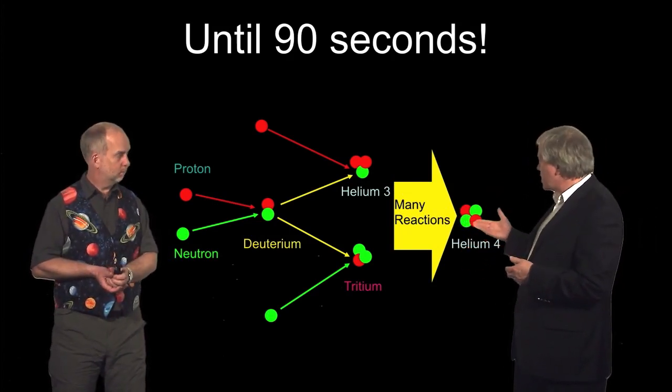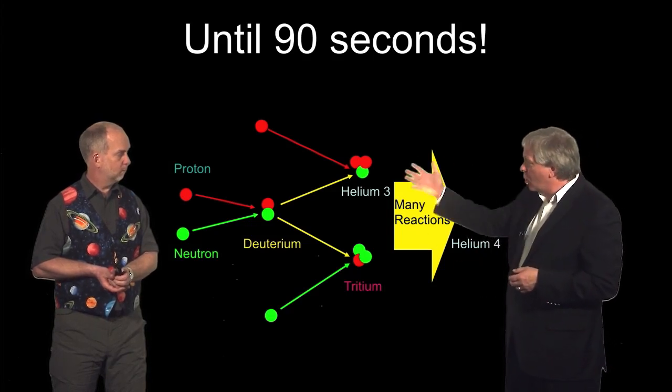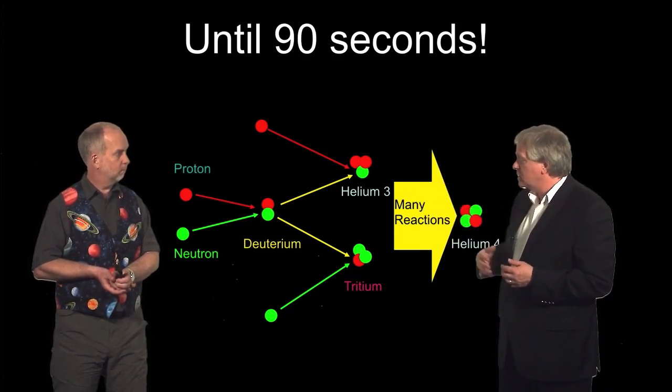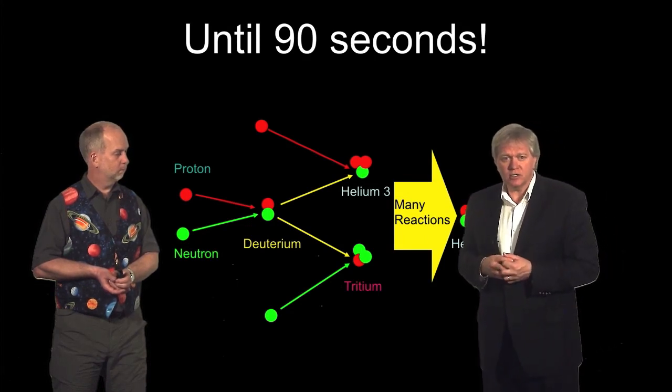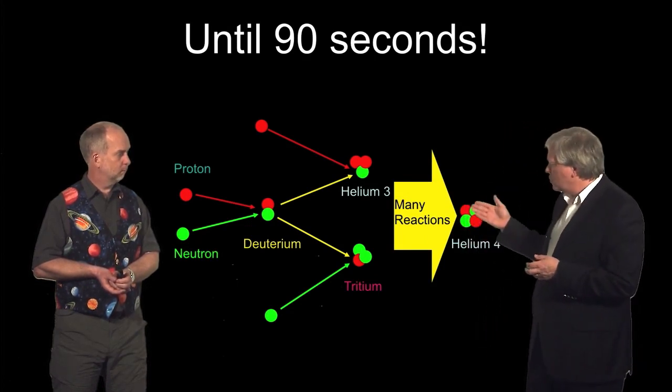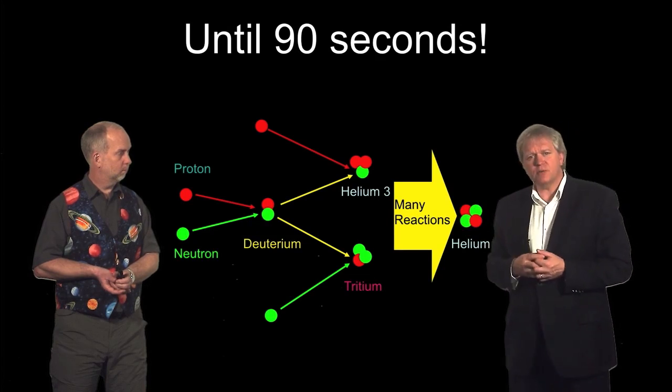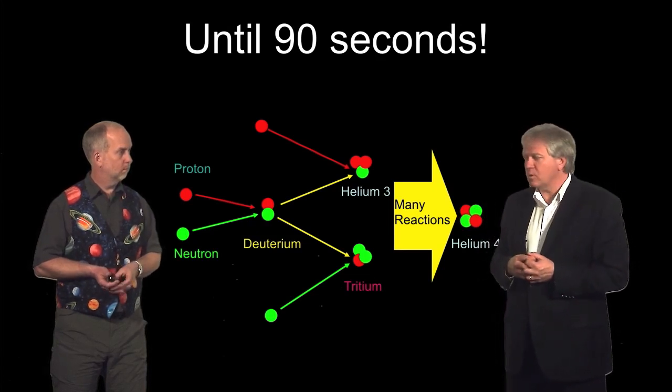And this whole nuclear reaction network, which we know very well thanks to our nuclear energy weapons programs, really predicts that 25% of the universe should be in the form of helium.